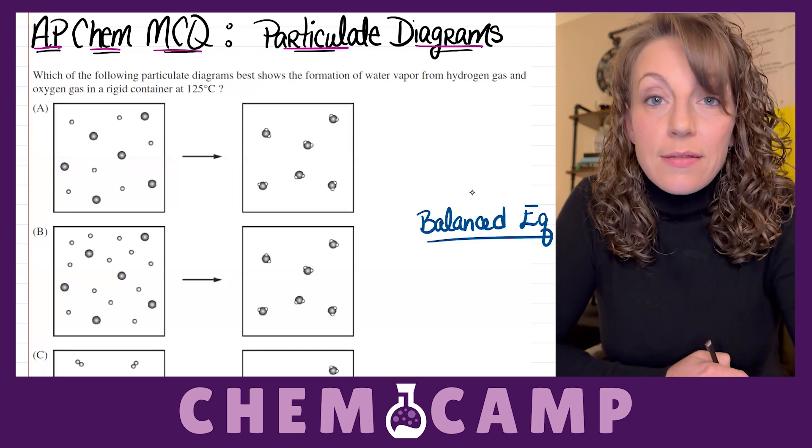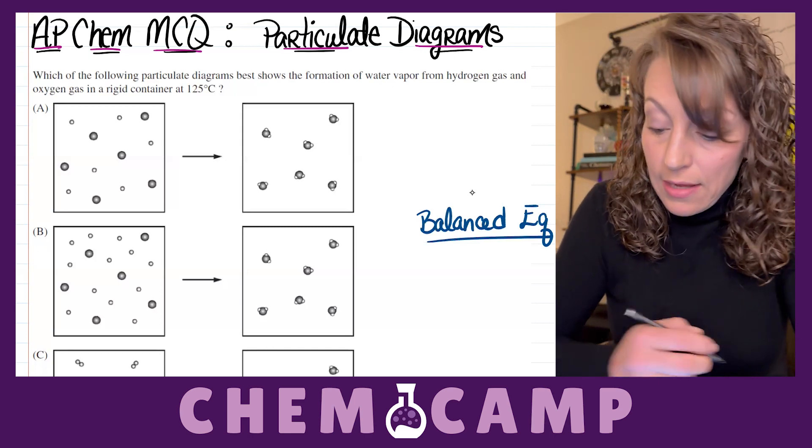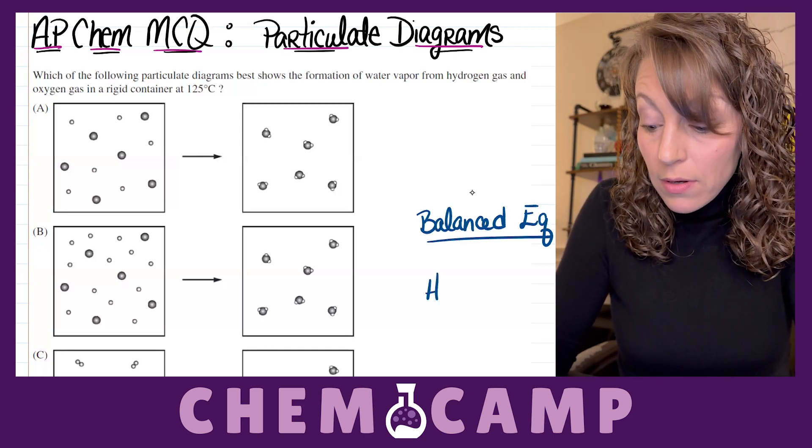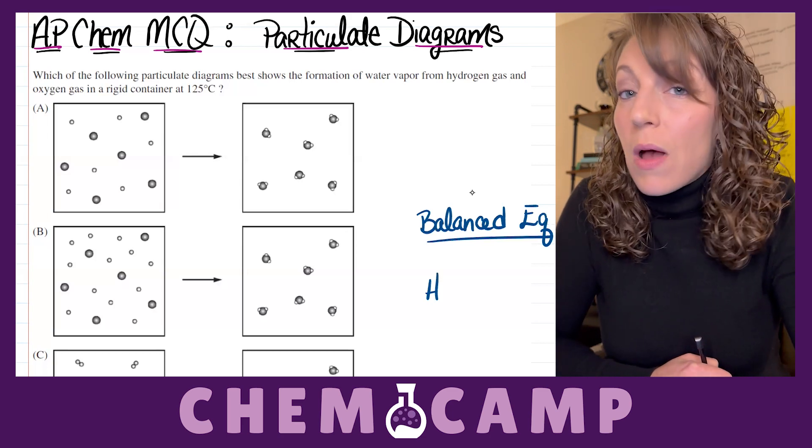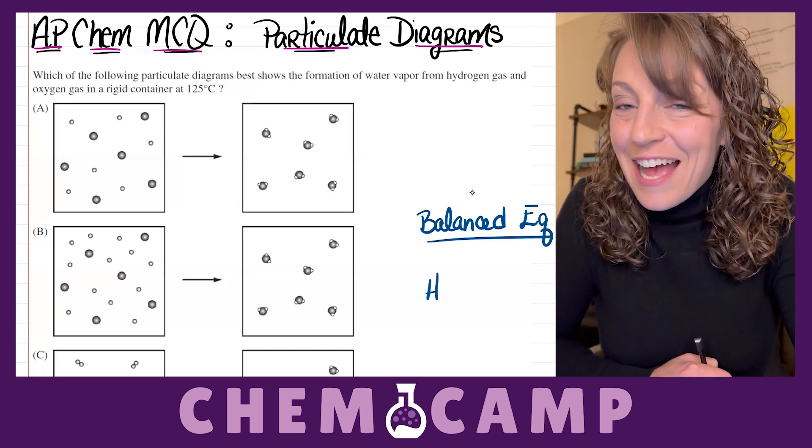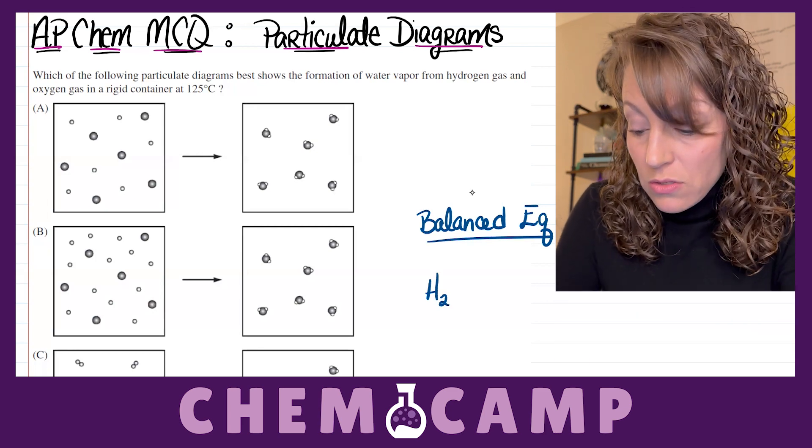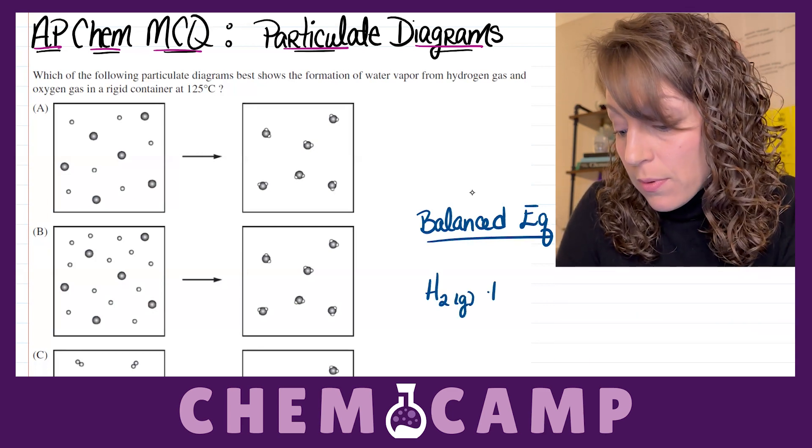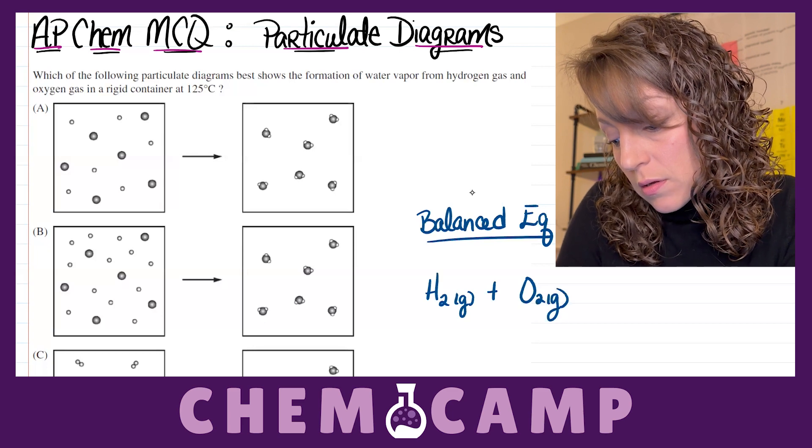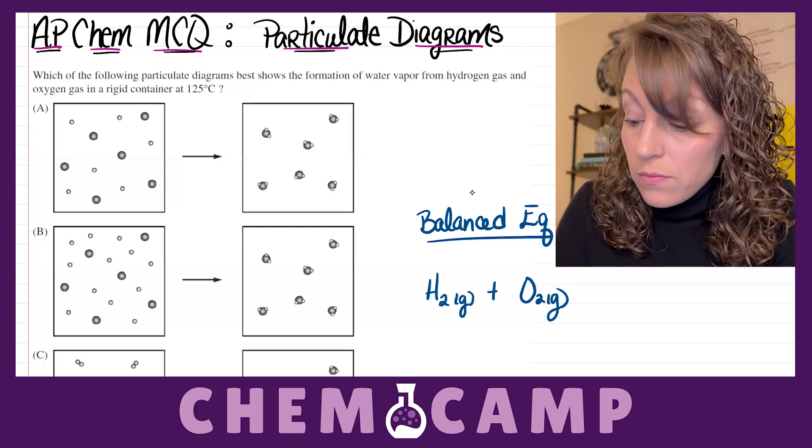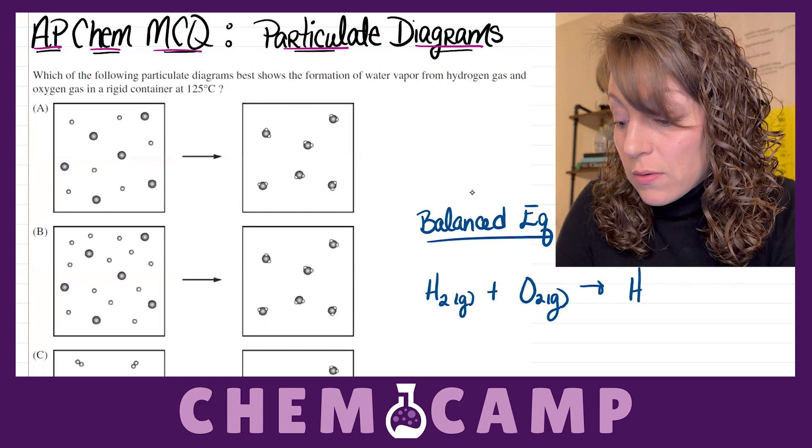We're starting with two gases, hydrogen gas and oxygen gas. We have to remember about these two particular gaseous molecules though, is they're diatomic molecules, meaning when you write them, you have to write them H2 plus O2. And they're going to form a little bit of water vapor, H2O gas.